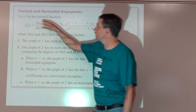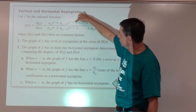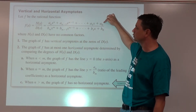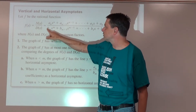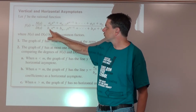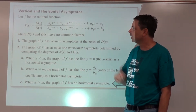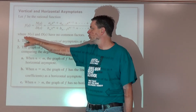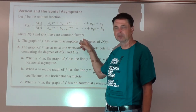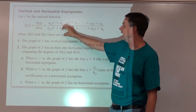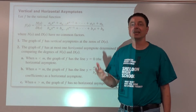Looking at our rational function f of x — numerator polynomial over denominator polynomial — listed out in standard form. We can also write it with leading coefficient b sub m times x to the power of m and so on. We're going to assume that our numerator and denominator have no common factors, so if you were to factor them out, you wouldn't see any factors that could cancel.